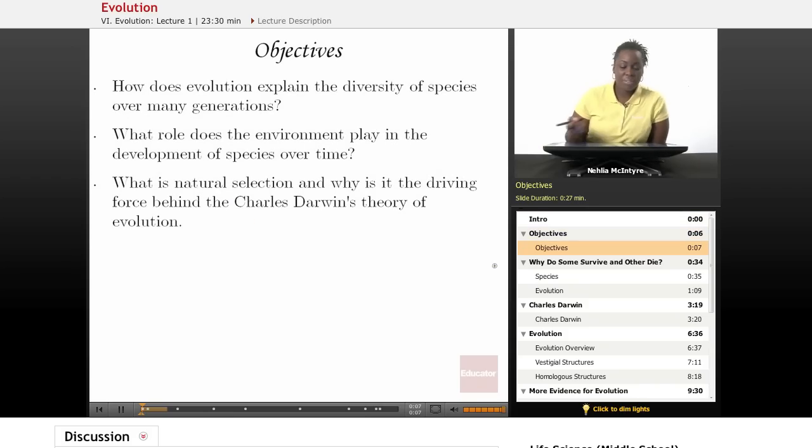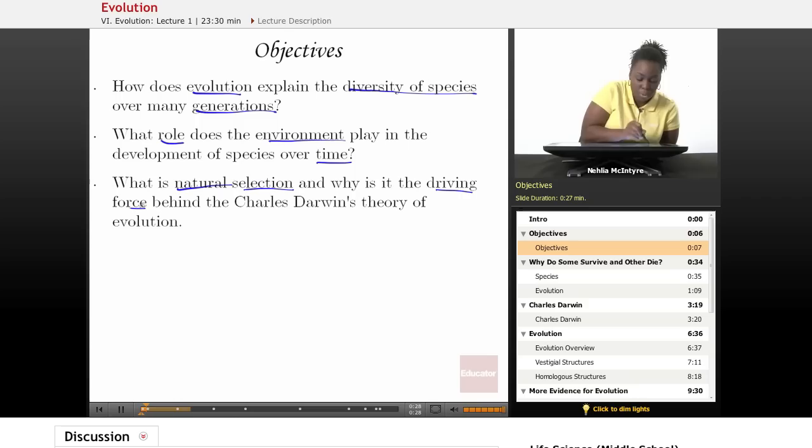Our objectives for this lesson will be, number one, how does evolution explain the diversity of species over many generations? Number two, what role does the environment play in the development of species over time? And number three, what is natural selection and why is it the driving force behind Charles Darwin's theory of evolution?